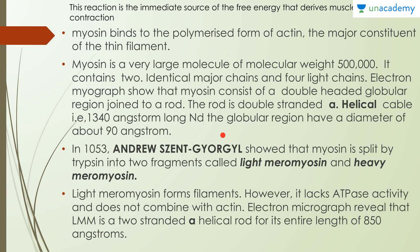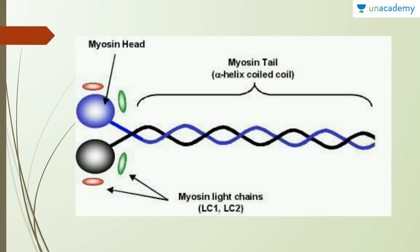It was shown that myosin is split by trypsin into two fragments: light meromyosin (LMM) and heavy meromyosin (HMM). Light meromyosin forms filaments; however, it lacks ATPase activity and does not combine with actin. Electron micrographs reveal that LMM is a two-strand alpha-helical rod for its entire length of 850 angstroms. The myosin structure consists of a tail region (helix) and myosin heads, with light chains present below the heads.